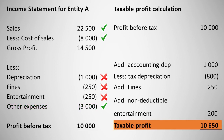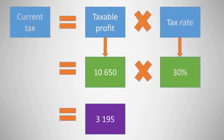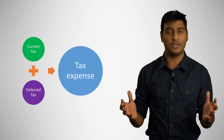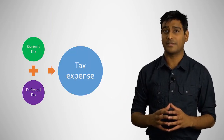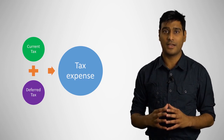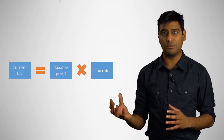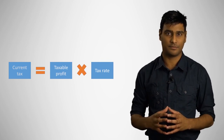Taxable profit of $10,650 is calculated when we add and subtract our adjustments. We then substitute this into the current tax formula, giving a current tax expense of $3,195. To recap: tax expense comprises current tax and deferred tax. Current tax is calculated by multiplying taxable profit by the tax rate.